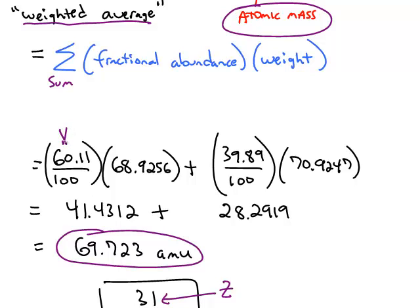Notice the larger percentage abundance gives you a greater contribution to the overall total. If an isotope is very prevalent in the natural sample, that isotope is going to make the biggest contribution to the average mass or the atomic mass.